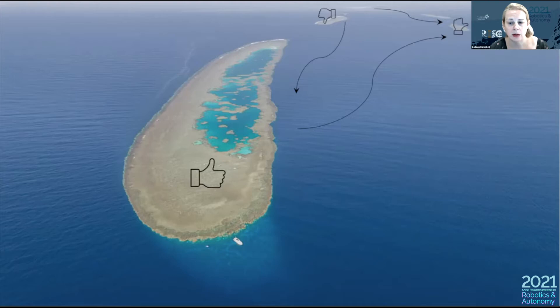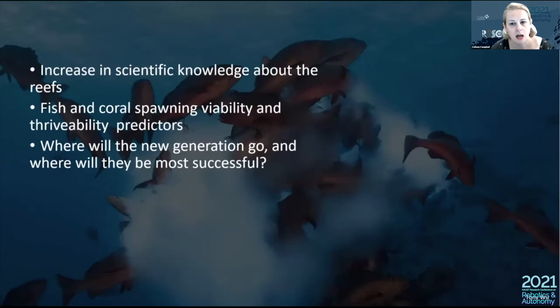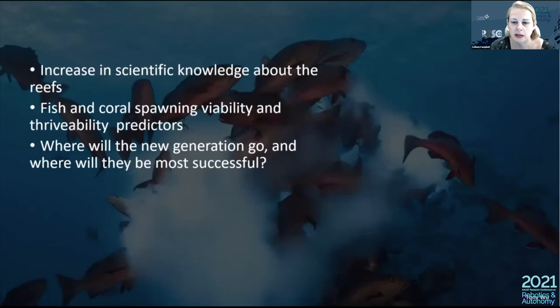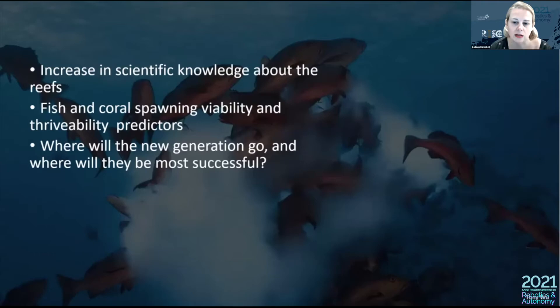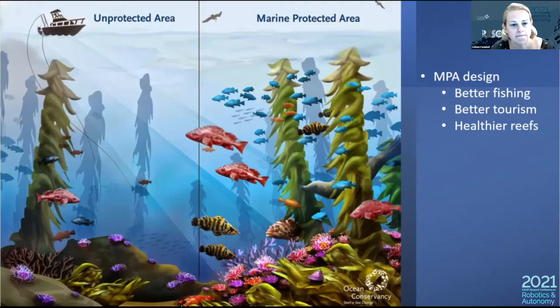As we look at networks of reefs and how they are connected, we can start answering questions: what animals inhabit the area, how bacteria and algae — vital for reef health — are doing, and how fish and coral will grow and change as climate events like El Niño or anthropogenic events like climate change affect the reefs. We can monitor how resilient reefs will be during these events and where new fish and coral recruits will go — whether they can survive, reproduce, and live long healthy lives.